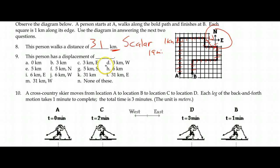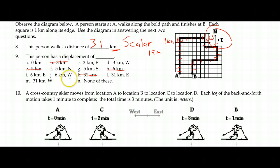Now we're going to figure out the displacement of the person. We're given multiple options. Anytime you're given multiple options with displacement, you can start by crossing off anything other than zero that doesn't have a direction. It cannot possibly be any of those quantities without a direction — other than zero, because zero doesn't really have a direction. Because it is a vector quantity, it has to have two elements: a magnitude and a direction. In this case, we'll use east, north, south, or west.